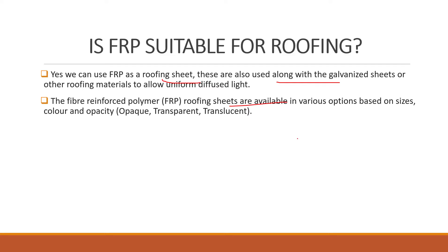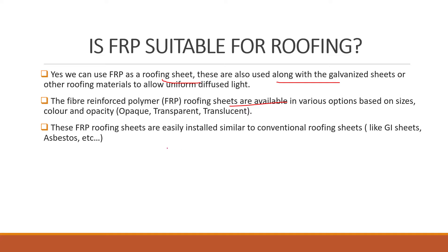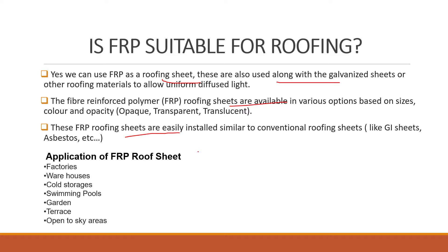FRP roofing sheets are available in various options based on sizes, color, and opacity — meaning opaque, transparent, or translucent material. These sheets are easily installed, similar to conventional roofing sheets like GI sheets, Asbestos sheets, etc. Applications include factories, warehouses, coal storages, swimming pools, garden areas, terrace or open-to-sky areas, and also domestic purposes.